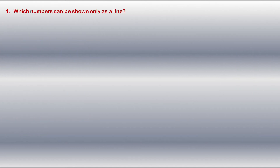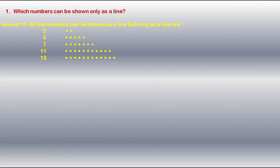This is the first question: Which numbers can be shown only as a line? The answer is — all numbers can be shown as a line, but the numbers that can be shown only as a line are 2, 5, 7, 11, 13, and so on. There are infinitely many numbers which can be shown only as a line.